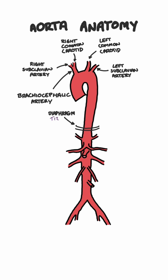We next see the small paired branches of the inferior phrenic arteries, which supply the underside of the diaphragm. Next we have the celiac trunk, supplying the liver, stomach, abdominal esophagus, spleen, the superior duodenum, and the superior pancreas.